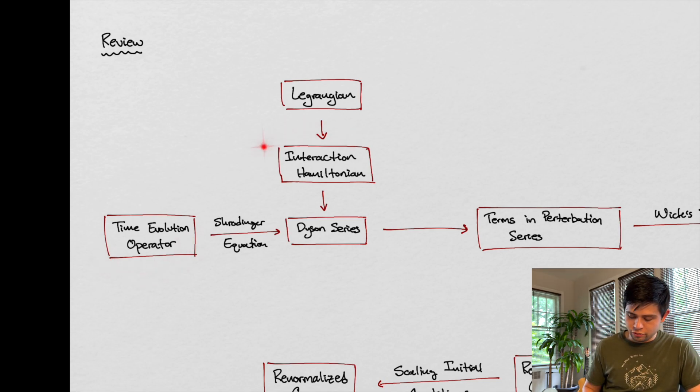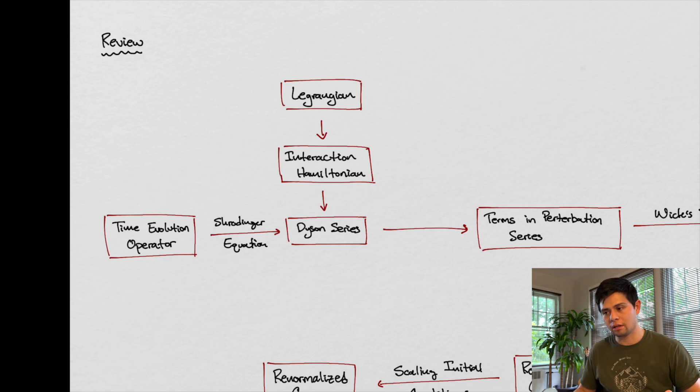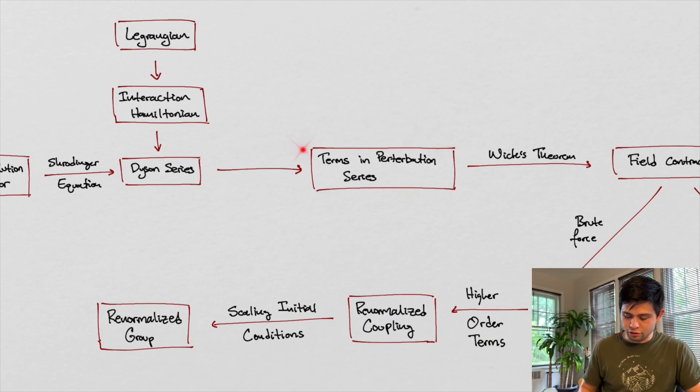From the Lagrangian, we were able to infer what our interaction Hamiltonians were, right? So we could add terms to the Lagrangian, and those terms, some of those terms could be interaction parts. Along with that, we had this time evolution operator, and we said, if it obeyed the Schrodinger equation and we wanted it to obey also the rules of the Taylor series, we were led to a Dyson series. Now, the Dyson series, what it does is it'll take in our interaction Hamiltonians, and from that,